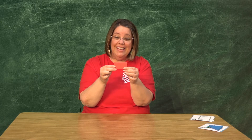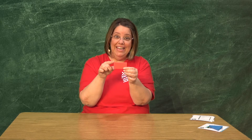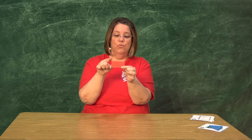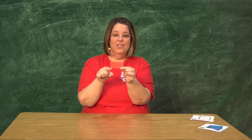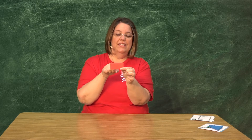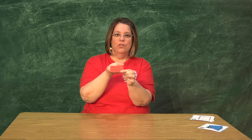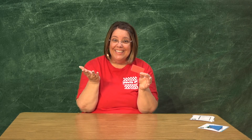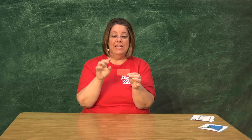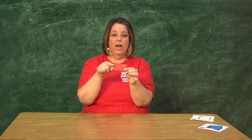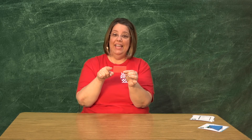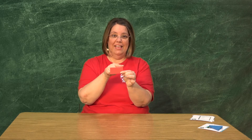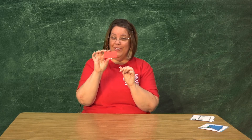Entonces, también tiene esquinas como el cuadrado. Vamos a contar las esquinas: una, dos, tres, cuatro. ¿Cuántas esquinas tiene? Sí, muy bien, tiene cuatro. Tiene cuatro lados o líneas y tiene cuatro esquinas. El rectángulo.